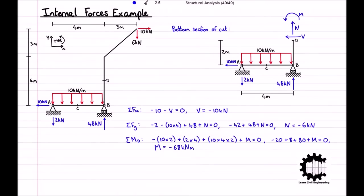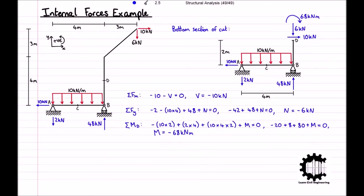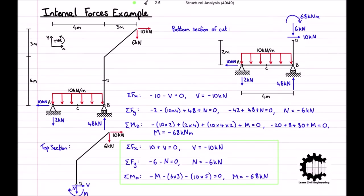We can conclude that at point D, there is a negative axial force of 6 kN, a negative shear force of 10 kN, and a negative moment of 68 kNm. Note also that this could have been done more easily by considering only the top part of the structure. I only chose to use the bottom part of the structure to demonstrate that you must use the entire part of the structure, not just up to the next support.